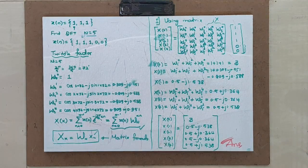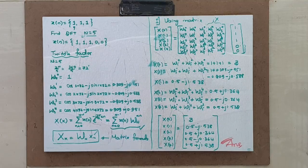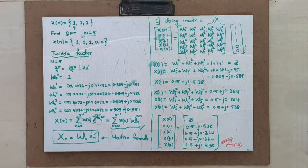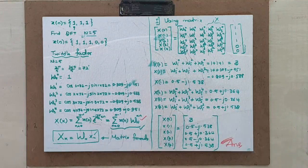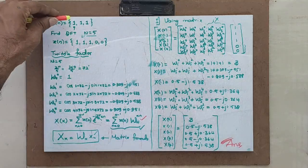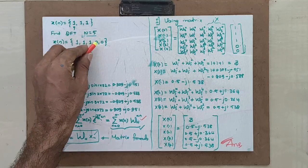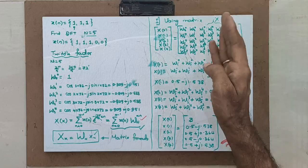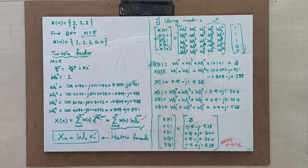Hence the final answer is: X(0)=3, X(1)=0.5−j1.538, X(2)=0.5+j0.364, X(3)=0.5−j0.364, X(4)=0.5+j1.538. This is the answer using the matrix method — the same as the previous approach, only N was odd here (N=5). Any arbitrary N like 6 or 7 can be solved using this matrix method.